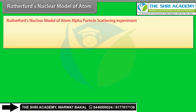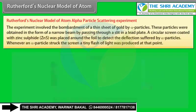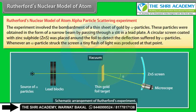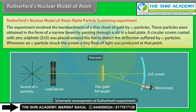Rutherford's nuclear model — alpha particle scattering experiment: The experiment involved bombardment of a thin gold foil by alpha particles, obtained as a narrow beam through a slit in a lead plate. A circular screen coated with zinc sulfide (ZnS) was placed around the foil to detect deflections. Whenever an alpha particle struck the screen, a tiny flash of light was produced at that point.